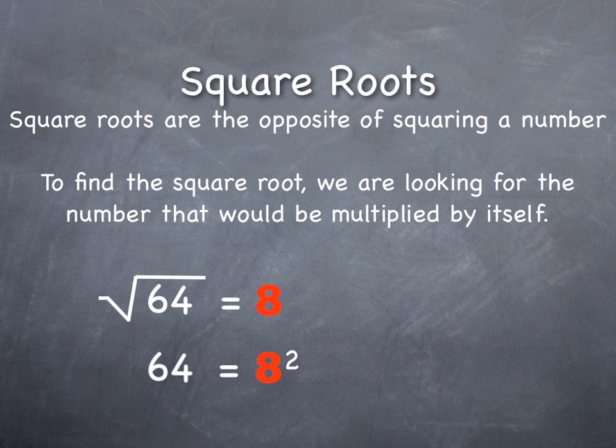Square roots work really well for what we call perfect squares, like 64, 49, and 36, but they don't work quite as nicely for other numbers, like 52.